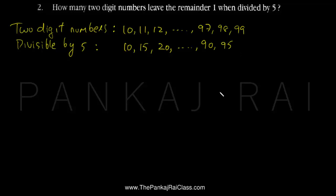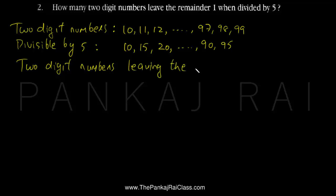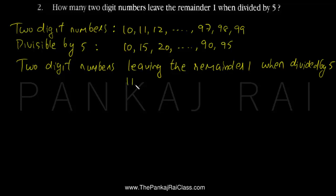Now we want the numbers which will leave remainder 1 when divided by 5. So every next number of this series — which is 11, 16, 21 ... 91, 96 — they all will leave remainder 1 when divided by 5. So let me make a list of the two-digit numbers leaving the remainder 1 when divided by 5: they will be 11, 16, 21 ... 91, 96.